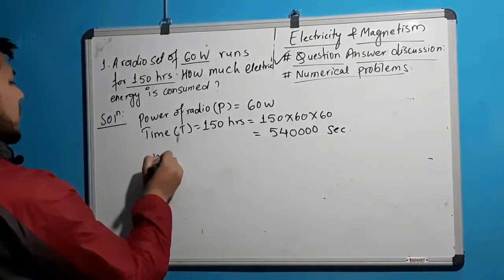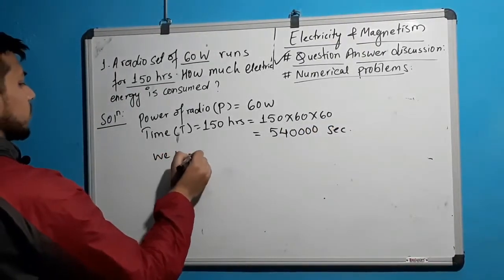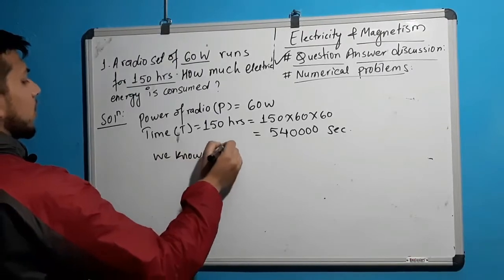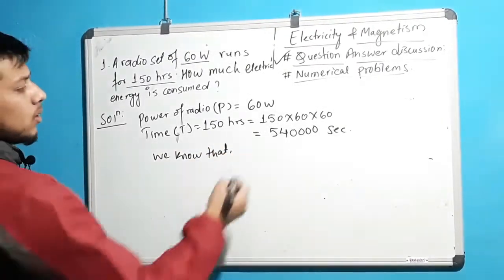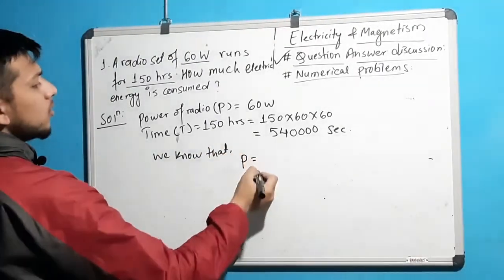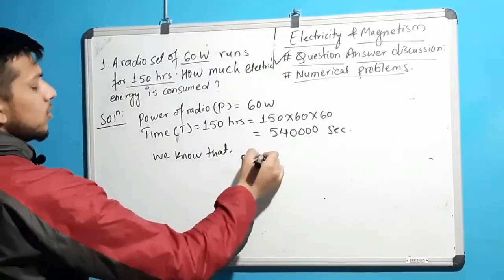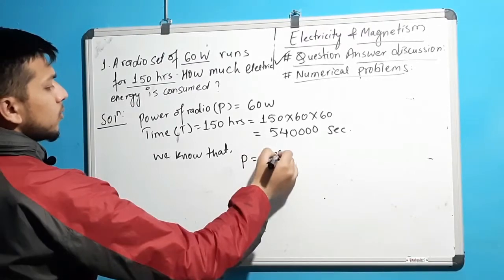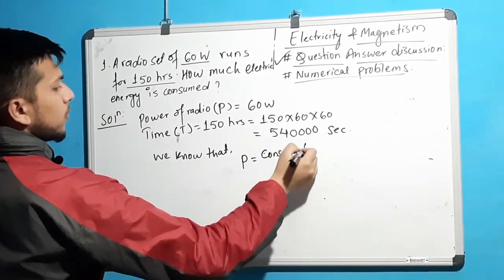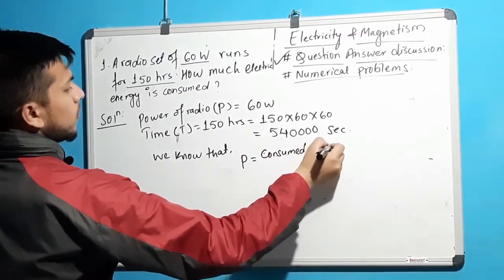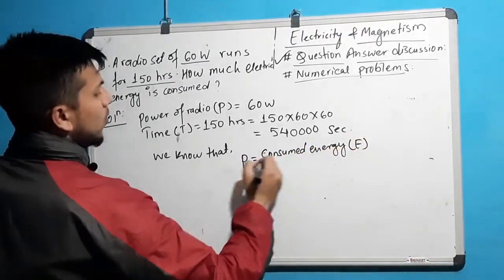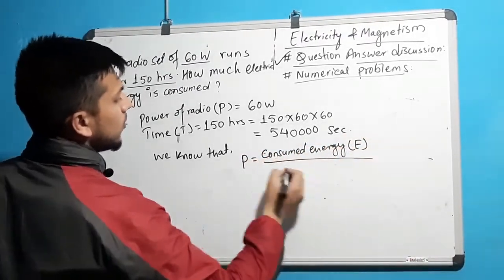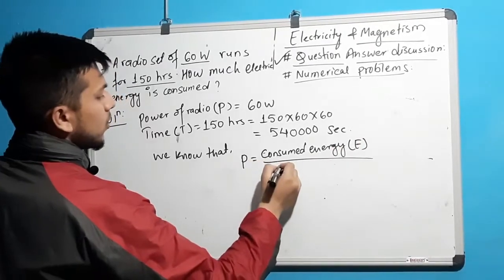We know the formula for power. Power P equals consumed energy E divided by total time T.